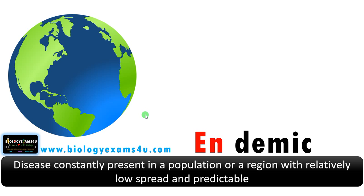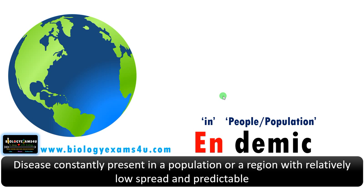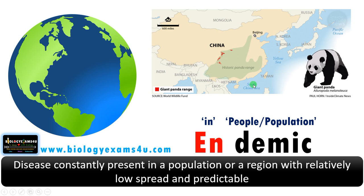The final term is endemic. 'En' means in, whereas 'demic' means people or population. To understand this, consider that the panda is endemic to China — meaning the geographical distribution of the panda is limited or restricted within China. Endemic diseases follow the same principle.